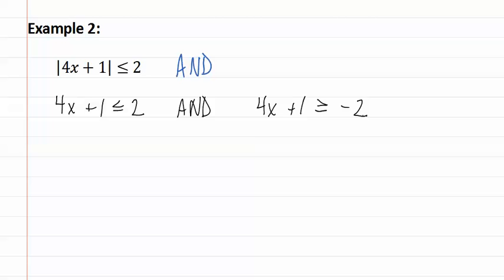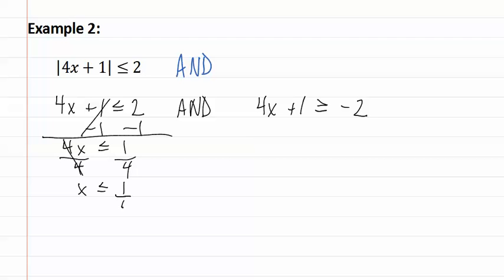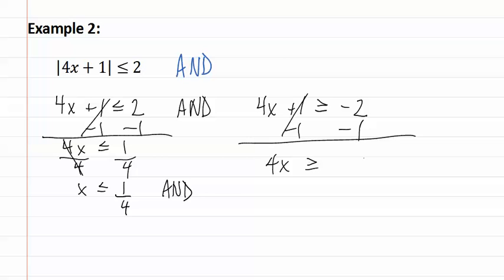Now we are going to solve each. Subtract one, and we get four x is less than or equal to one. Then divide each side by four, and we get x is less than or equal to one-fourth. And we subtract one from each side, and we get four x is greater than or equal to negative three. Divide each side by four, and we get x is greater than or equal to negative three-fourths.